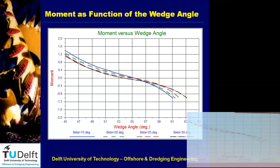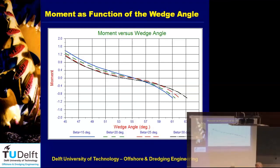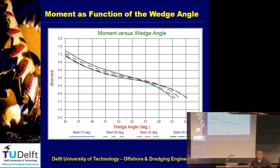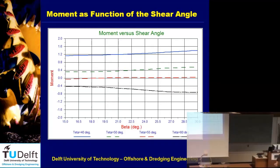So whatever I choose for my shear angle, the moment is about zero at 55 degrees. I can say: if I choose 55 degrees for the tip of my wedge — and I found later that this angle is independent of the blade angle — so whether I have a 90-degree or 120-degree blade angle, the tip angle of the wedge is roughly the same. In this case, 55 degrees.